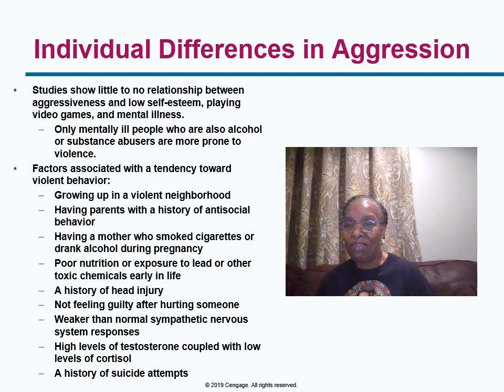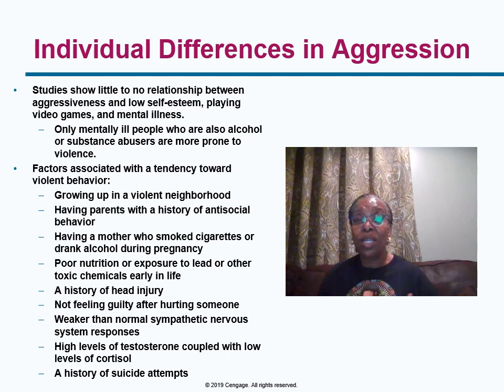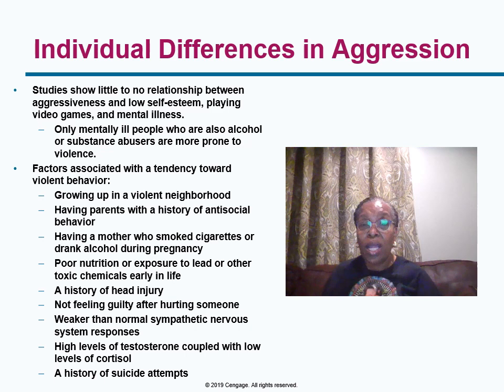Not feeling guilty when you hurt somebody is definitely a factor. Weaker sympathetic nervous system responses correlate with not feeling bad after hurting somebody else. High levels of testosterone combined with low levels of cortisol, as well as a history of suicide attempts — these are all differences that might explain why someone might become violent.